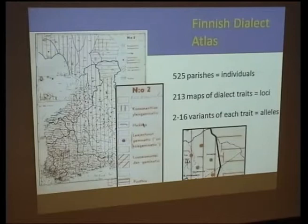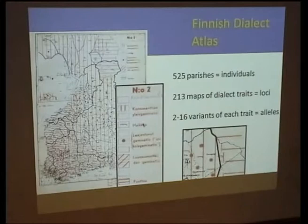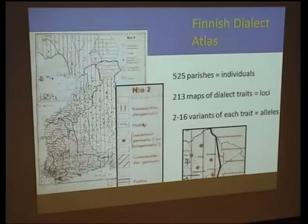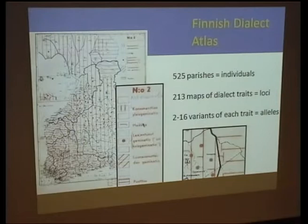We consider the parishes as individuals — for example, each parish is treated as one individual. We have 525 individuals, each with a genome, and we study loci from the genome. We consider the dialectal traits as loci, so we have 200 loci. As in diploid organisms having two alleles, there can be many alleles in the population, and we have 2 to 16 variants per individual municipality.